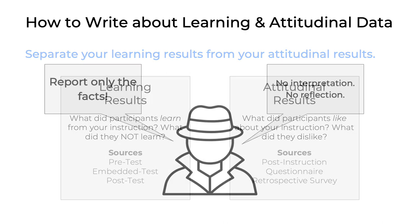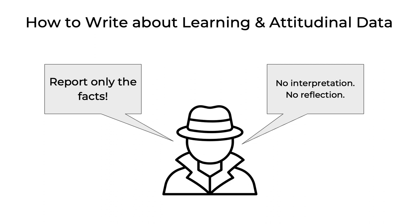Now, just like when you wrote about your usability results, these two new sections of your paper should report only the facts. You don't need to do any interpretation or reflect on why you got the results you got. The goal is to simply tell the reader in a matter-of-fact way: this is what my participants learned and this is what they did not learn, and this is what they liked and this is what they did not like.